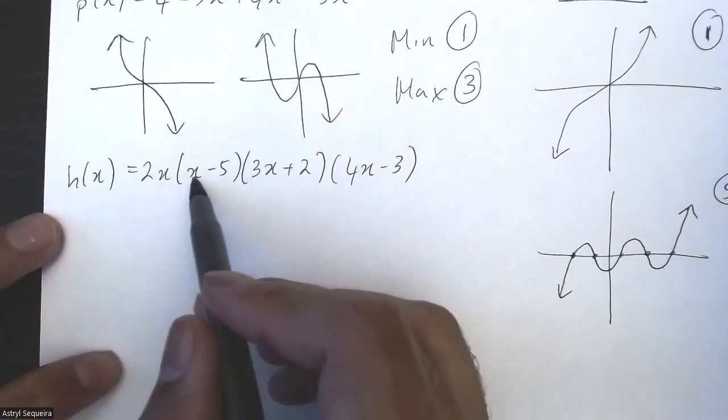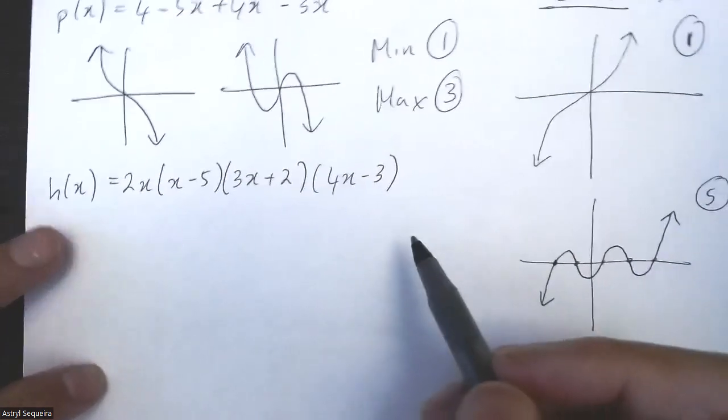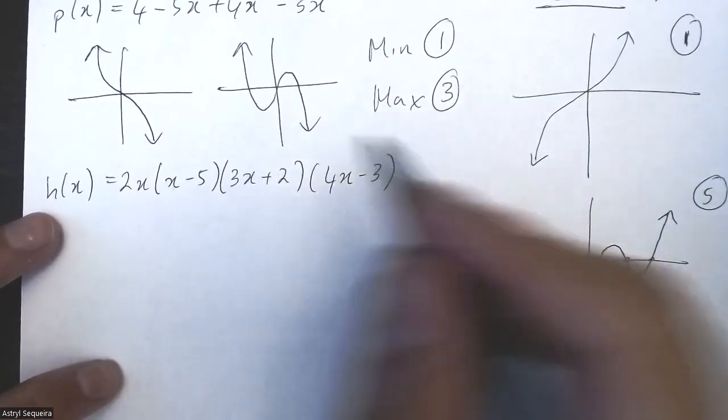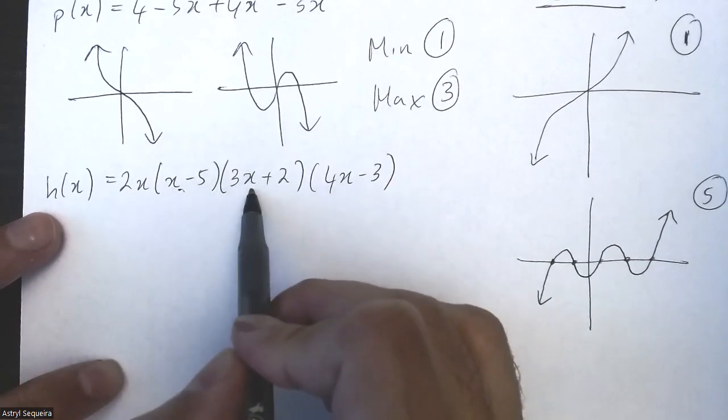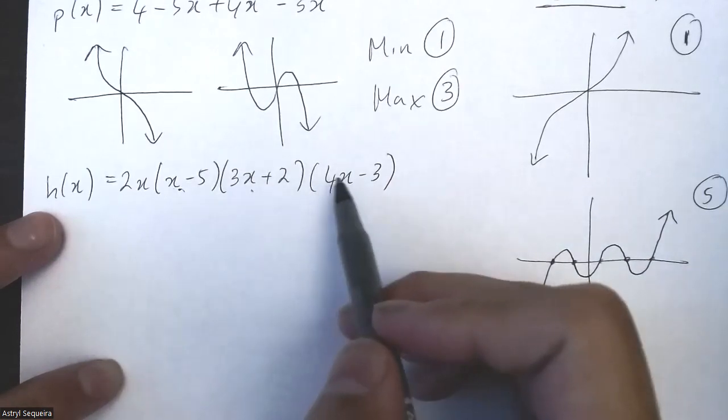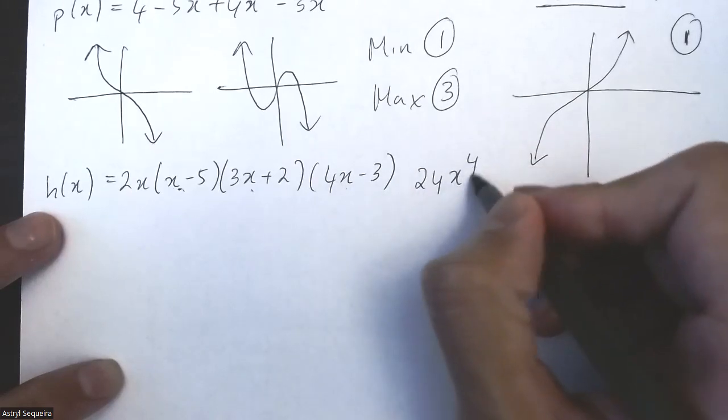And last question here, we've got to multiply all the x terms to actually find our leading coefficient and our degree. Two x times x is two x squared, times three x is six x cubed, times four x is 24 x to the fourth.